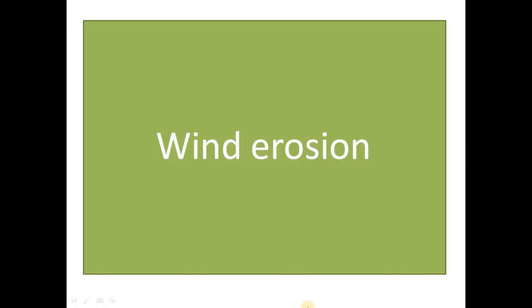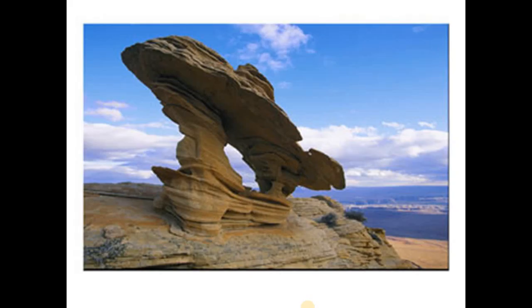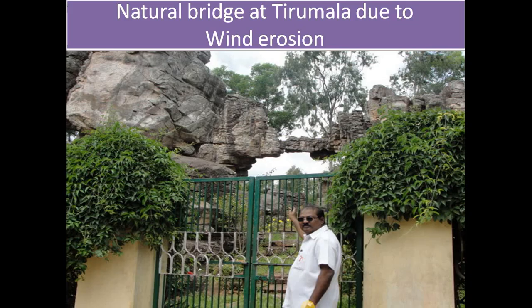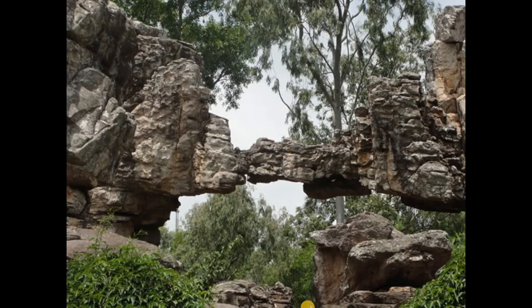One more topic, which is not directly connected to geological works of rivers, is wind erosion. Wind acts in a similar fashion. Due to wind erosion, structures appear in a distinctive form. The best example is the natural bridge at Tirumala, formed due to wind erosion.